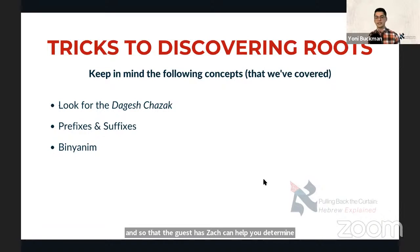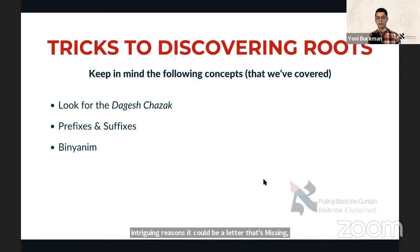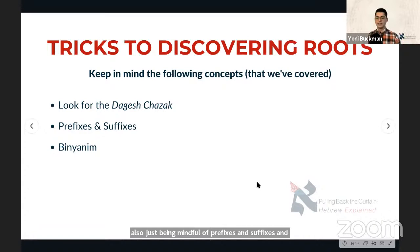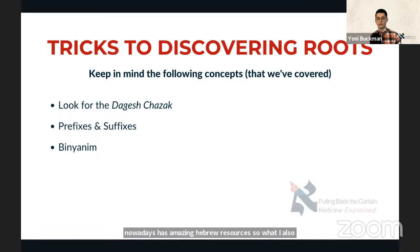Being mindful of prefixes, suffixes, and binyanim is going to be very helpful in discovering roots. The internet also has amazing Hebrew resources nowadays. Wikipedia has a Wiktionary, and there are really amazing resources where, if you can copy and paste into Google, you might find very useful tools. If you're trying to find a word and aren't sure of the root, those are great places to look.